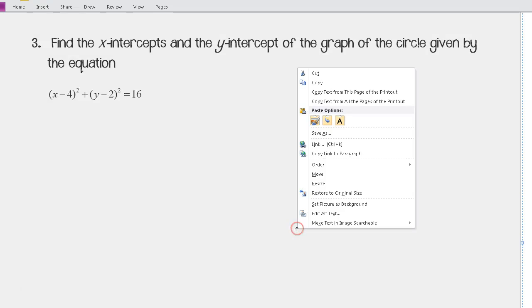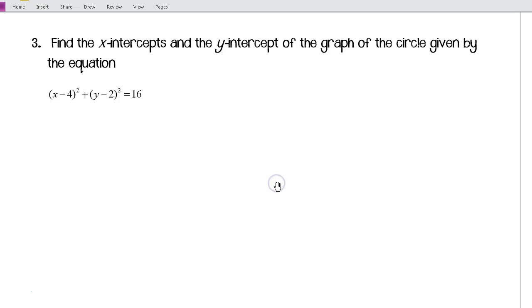Find x-intercepts and y-intercepts of the graph of the circle given by the equation. So, for my y-intercepts, this means that our values of x is 0. Okay, so if I plug 0 in for x, I'm going to have (0 - 4)² + (y - 2)² = 16.